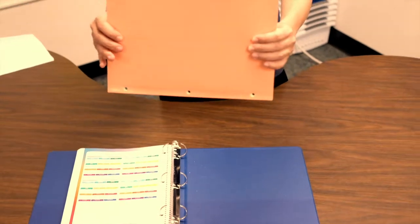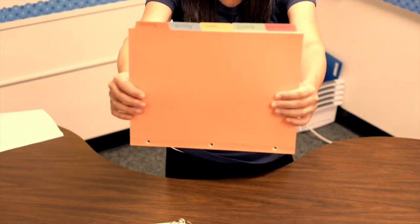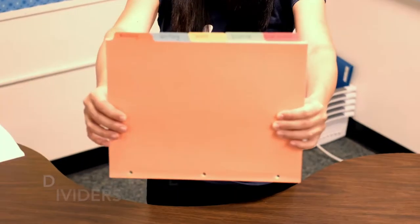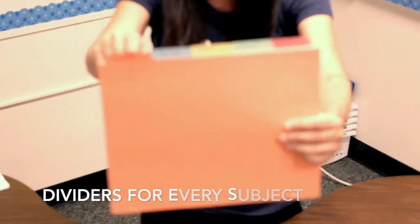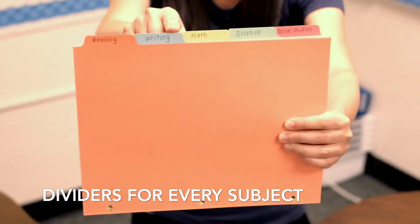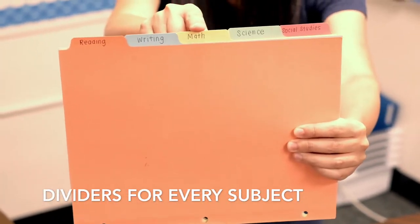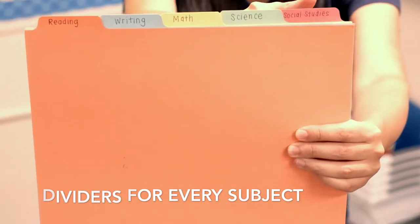Next we need dividers. As you can see we have a divider for every subject. For example, we have reading, writing, math, science, and social studies. This may be different depending on your teacher.